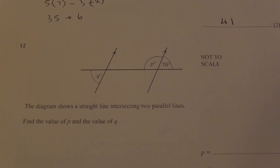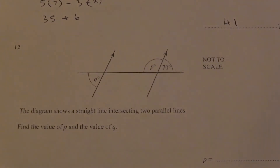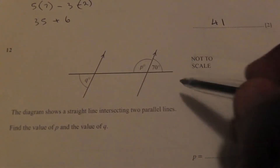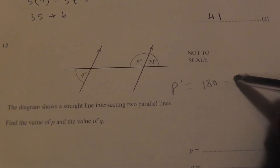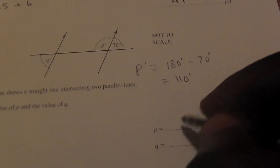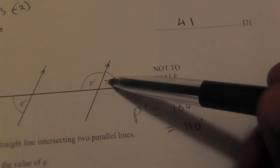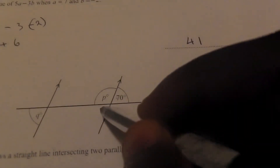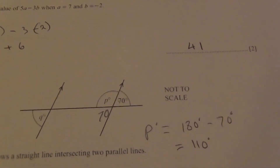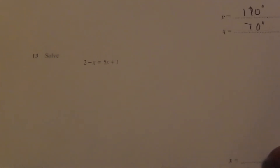The diagram shows a straight line intersecting two parallel lines. Find the value of p and q. For p: p and 70° are on a straight line, so they add up to 180°; therefore p = 180 − 70 = 110 degrees. For q: the 70° angle and the angle vertically opposite to it are equal (70°), and q is an F-angle (co-interior/alternate) equal to that, so q = 70 degrees.